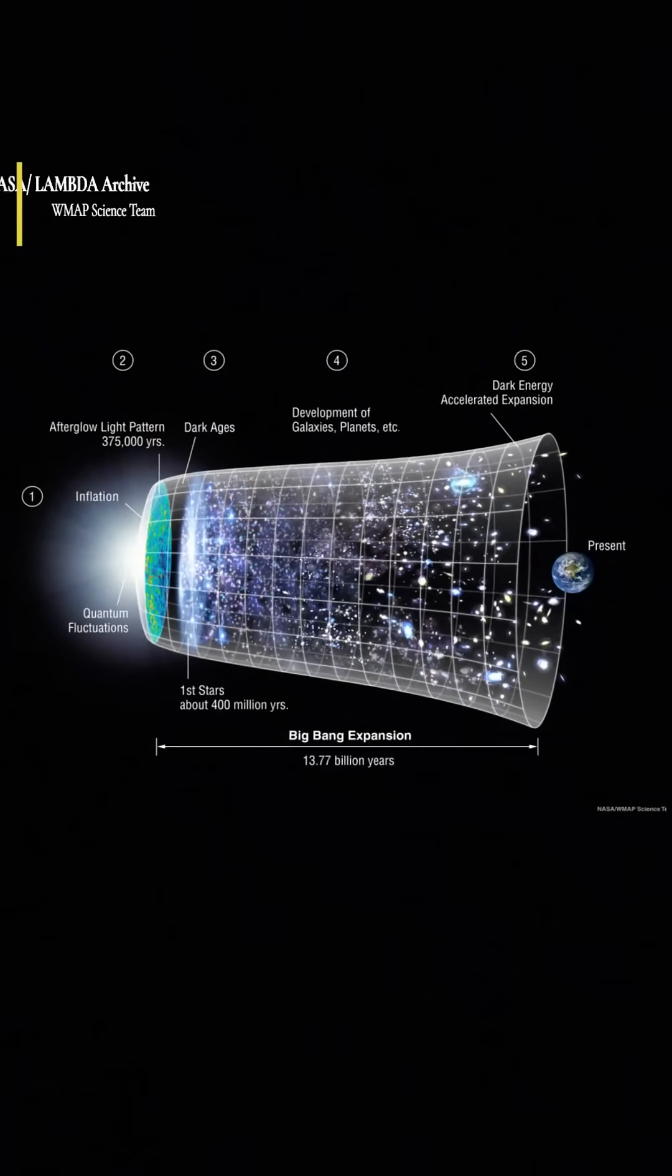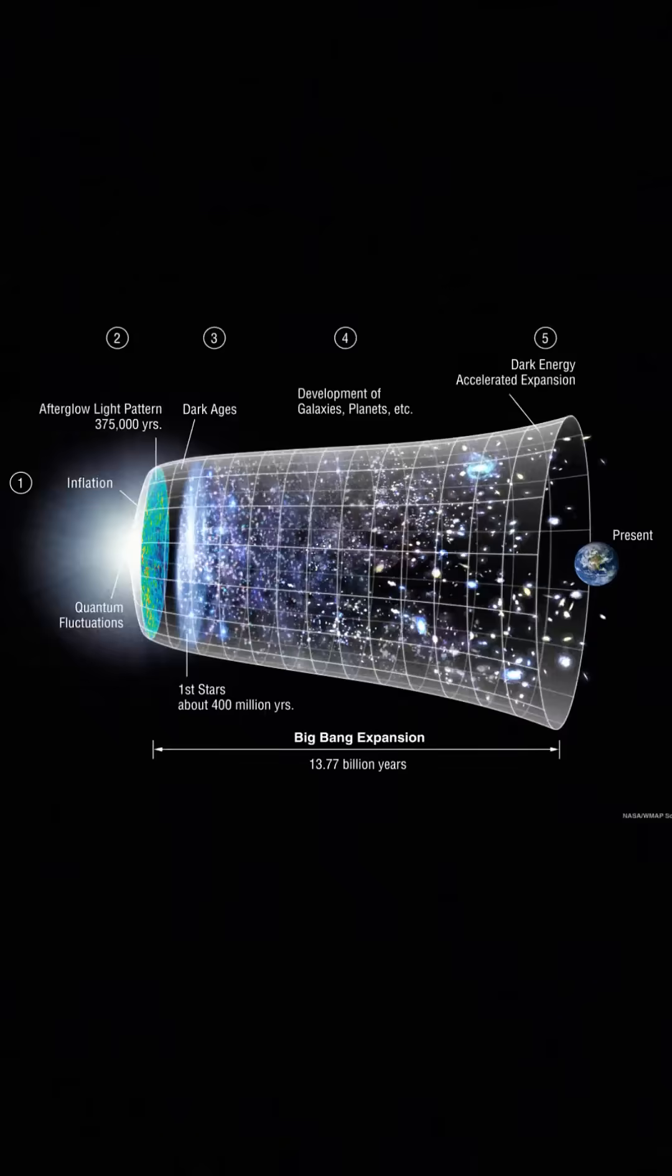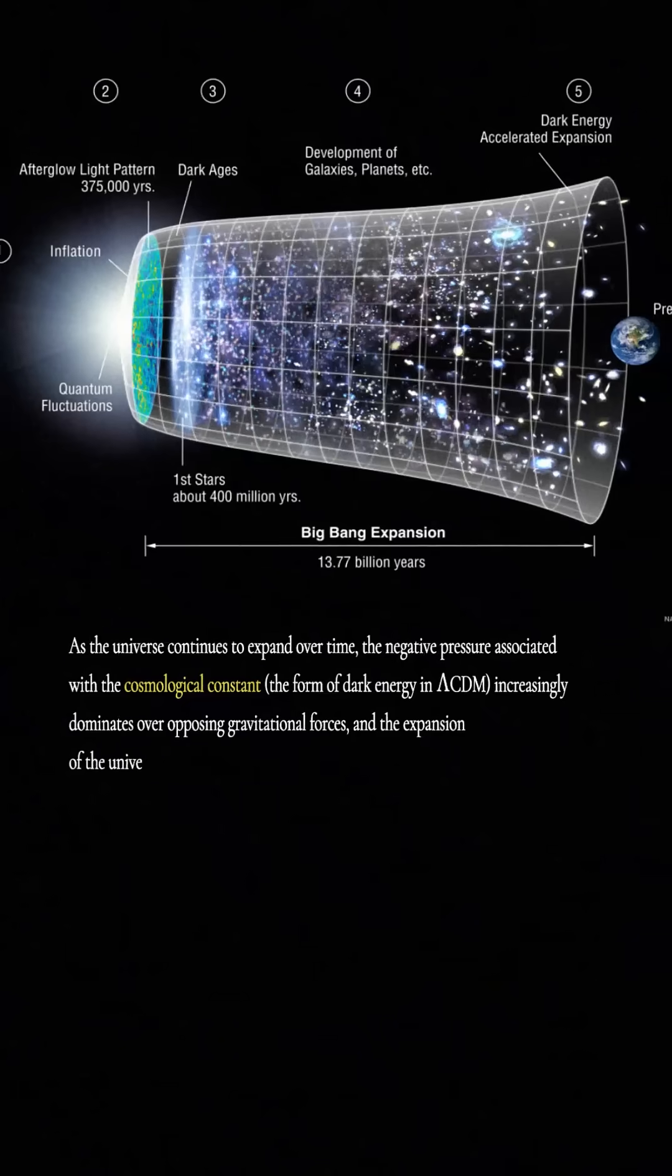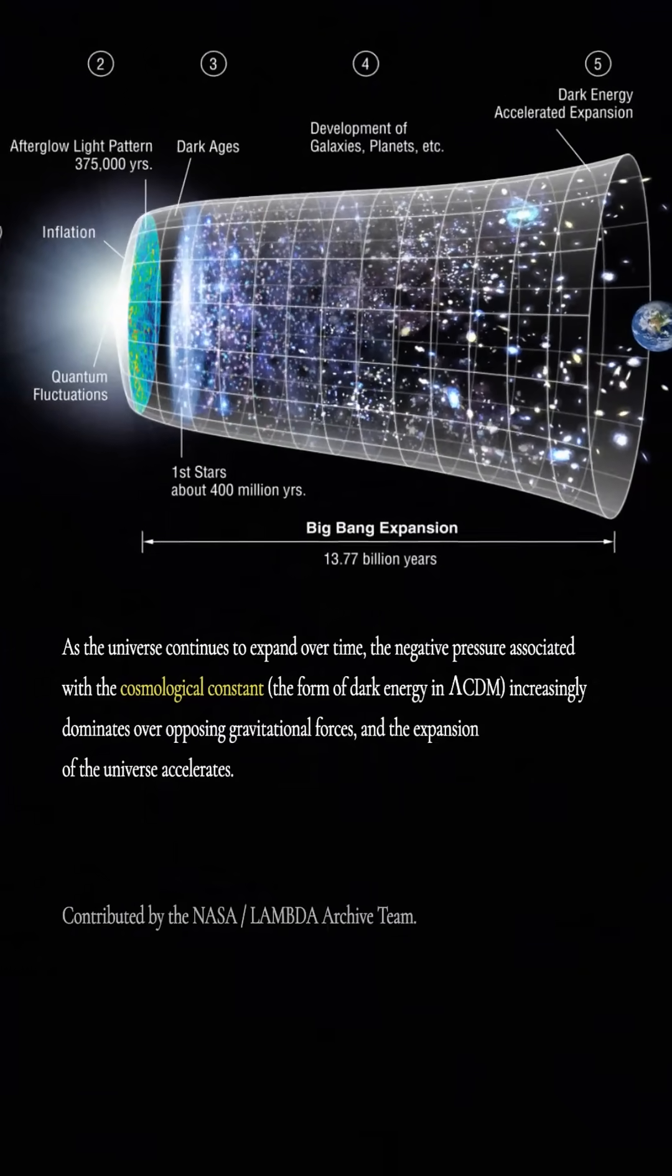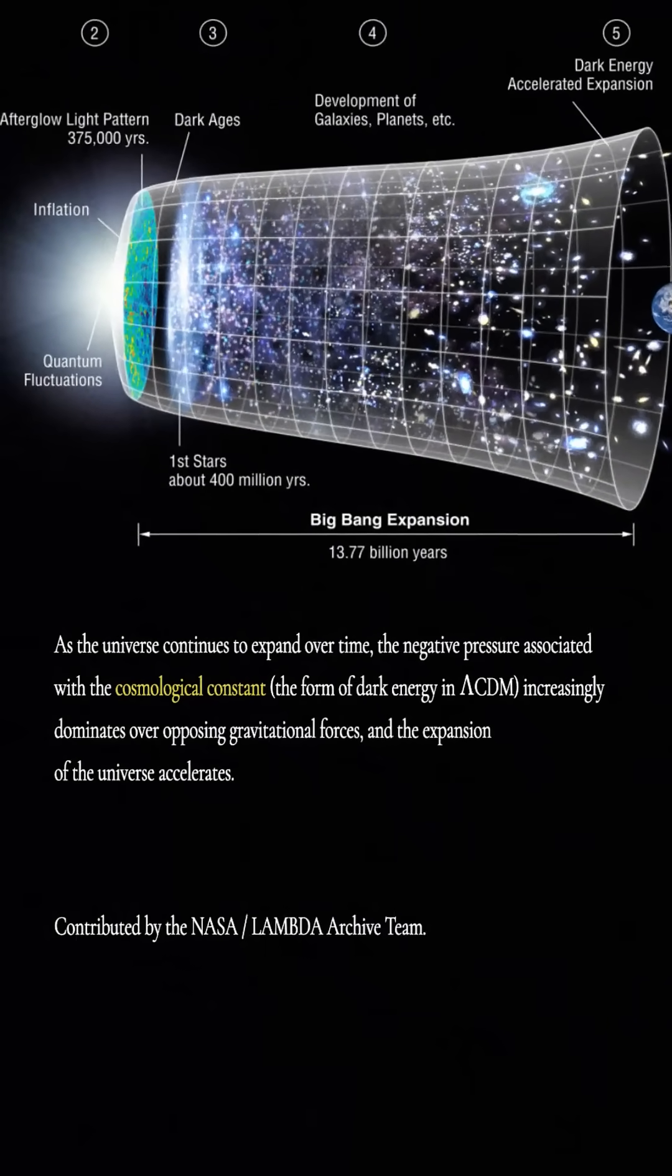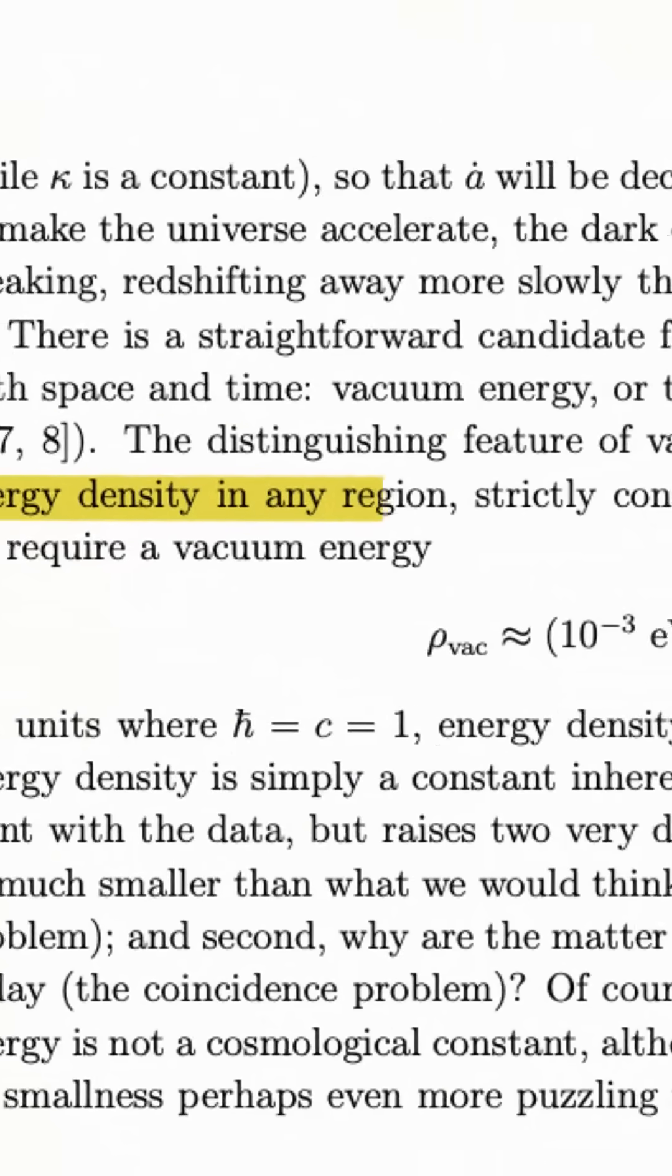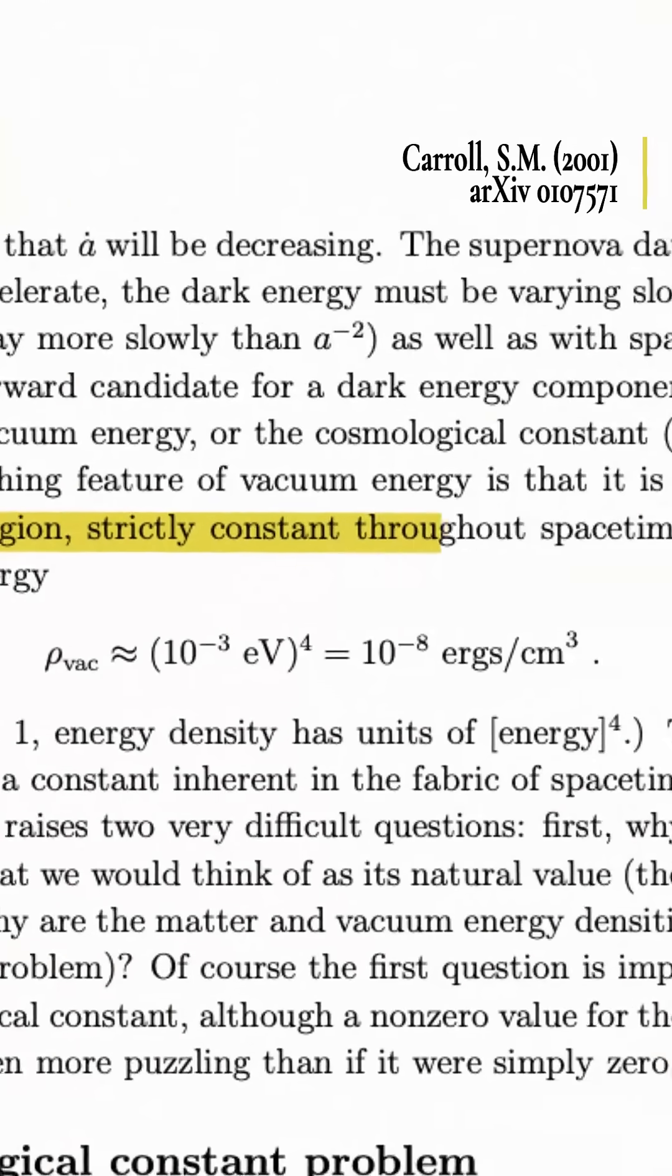The standard model of cosmology incorporates lambda in its description. And as the name cosmological constant suggests, lambda was assumed to be non-changing, pushing by the same amount everywhere in space and over the entire history of the universe.